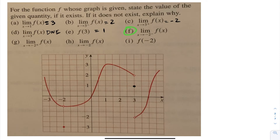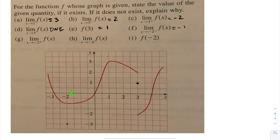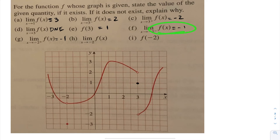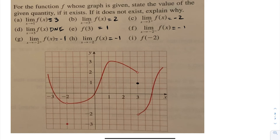Let's try part f. As I approach negative 2 from the left, I can see that my function is approaching a value of negative 1. As I approach negative 2 from the right-hand side, I can see that my function is approaching negative 1 again. So for part h, they want us to determine what is the limit as x goes to negative 2 of f at x. In this case, as I approach it from the left or from the right, we're getting the same value, so the limit as x approaches negative 2 of this function is negative 1. And as a quick observation, f at negative 2 is actually equal to negative 3.